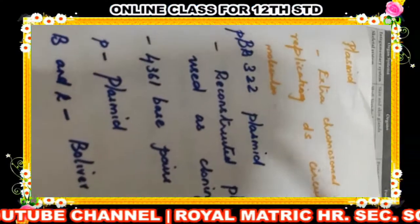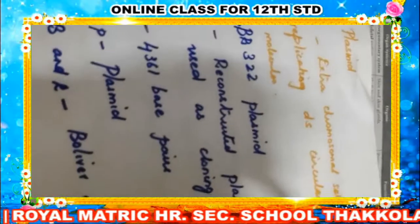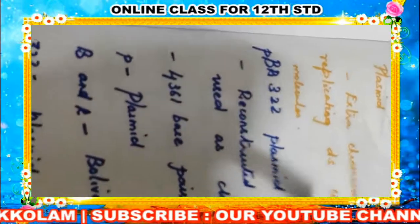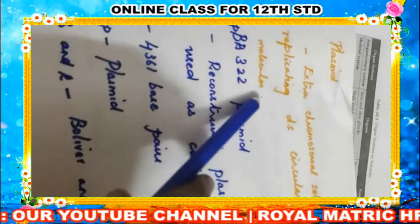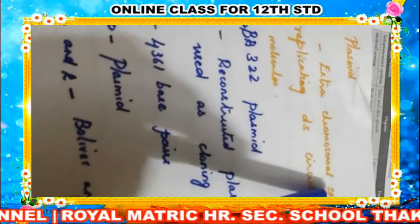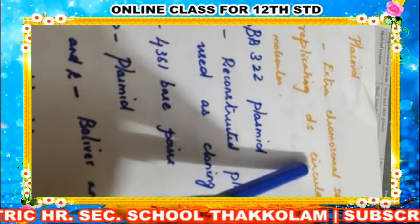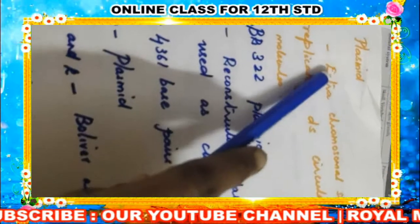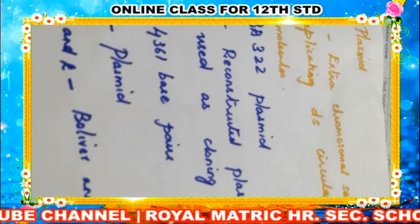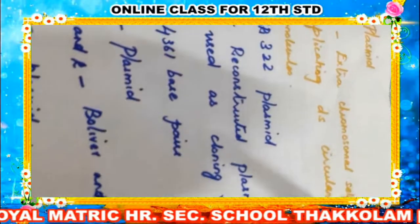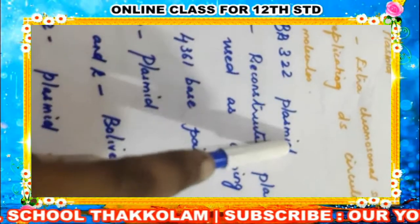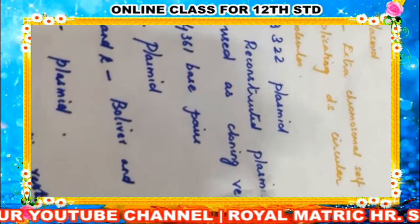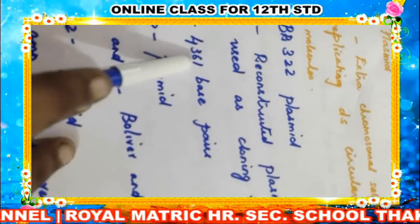Next we will move to plasmids. Plasmids are extra-chromosomal, self-replicating, double-stranded circular DNA molecules found in the bacterial cell, in addition to the bacterial chromosomes. One example is the pBR322 plasmid. This is a reconstructed plasmid widely used as a cloning vector, and it has 4,361 base pairs.